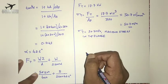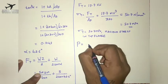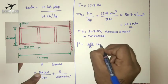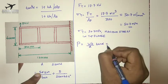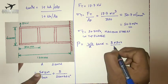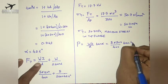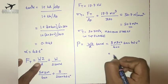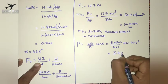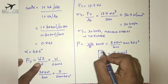Now we find the compressive load acting on the vertical stiffener. The formula is: P = W·B / (D · tan(alpha)). With W = 5 kN, B = 300 mm, D = 400 mm, and alpha = 42.6 degrees, the value of compressive load acting on the vertical stiffener is 3.4 kN.